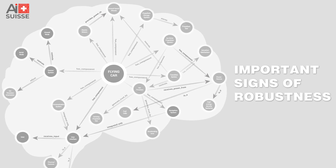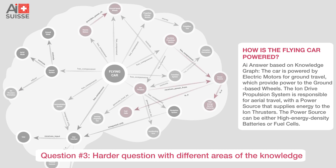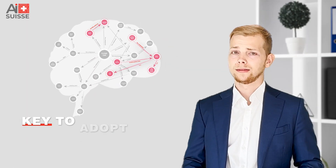What's also very interesting about this tool is that it's showing very important signs of robustness. Let's ask the following question: 'How is this car powered?' We see two different areas of the knowledge graph are being activated — one because in the air it's powered by ion thrusters, and the second because on the ground it's powered by an electric motor.